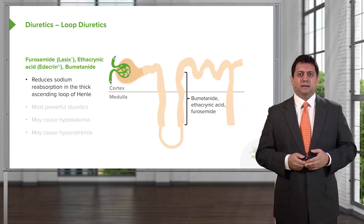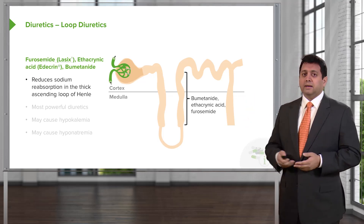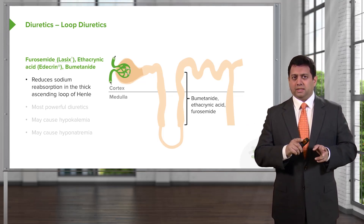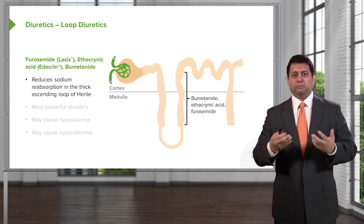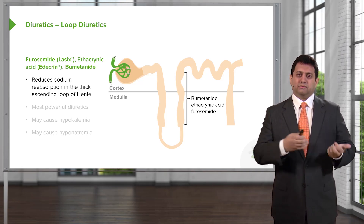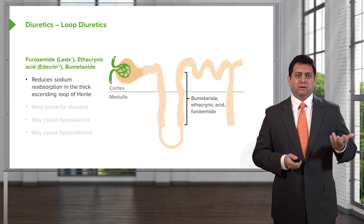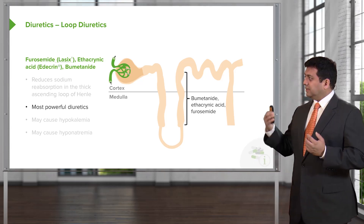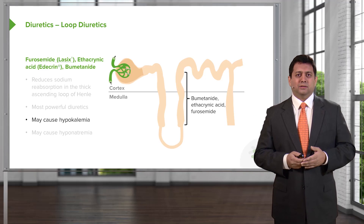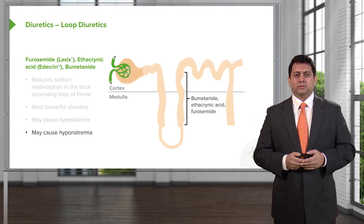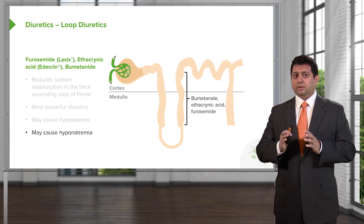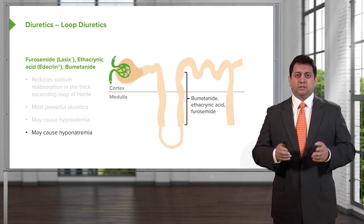Loop diuretics are very powerful because they alter the counter-current mechanism in the kidney. When you disrupt that counter-current mechanism with a loop diuretic, you get quite a massive diuretic effect, making it the most powerful of the diuretic classes. The downsides include low potassium, and in some cases low sodium, although that's much less common. Furosemide is also very effective in renal failure, so you'll often see nephrologists prescribe it in certain circumstances.